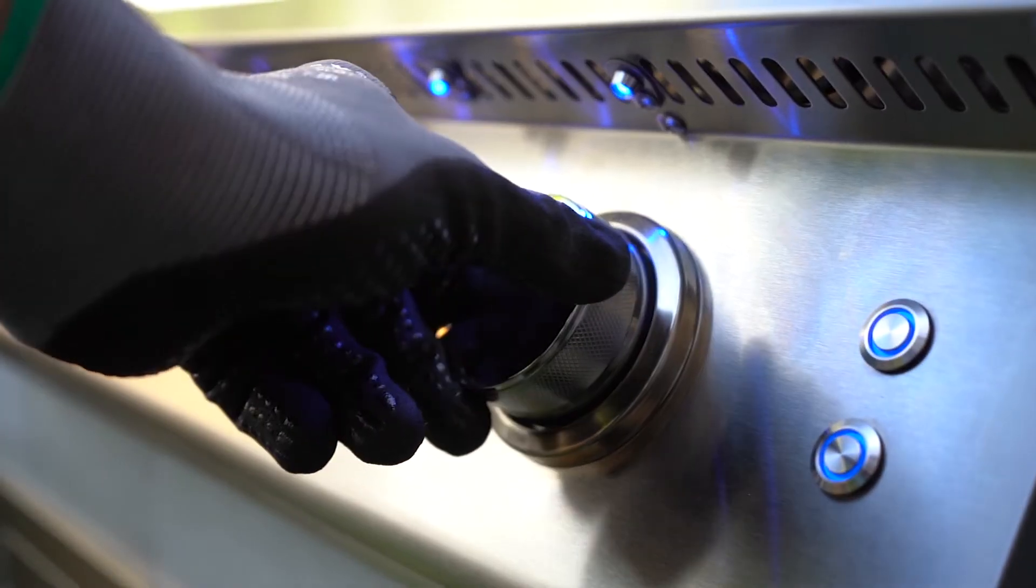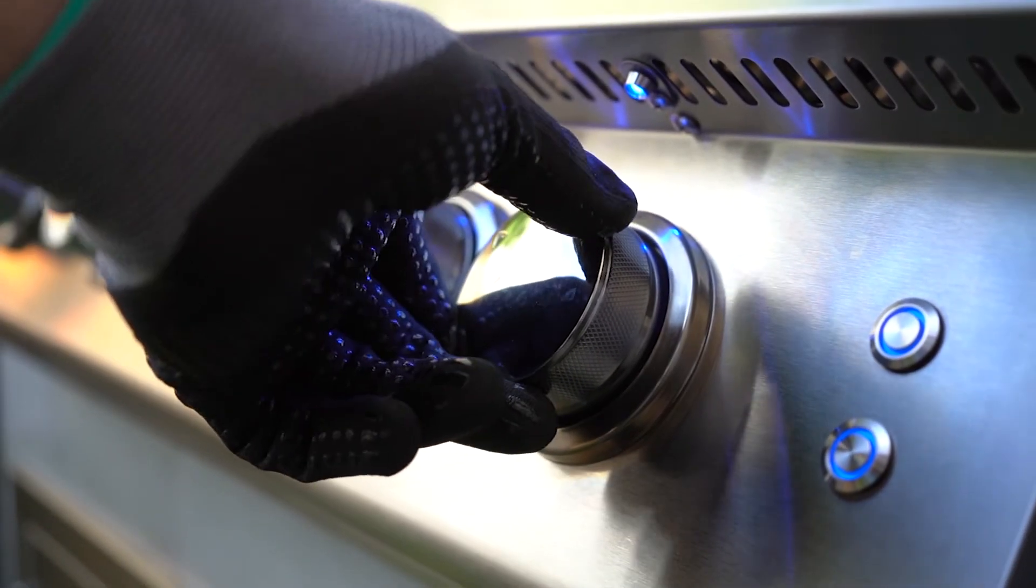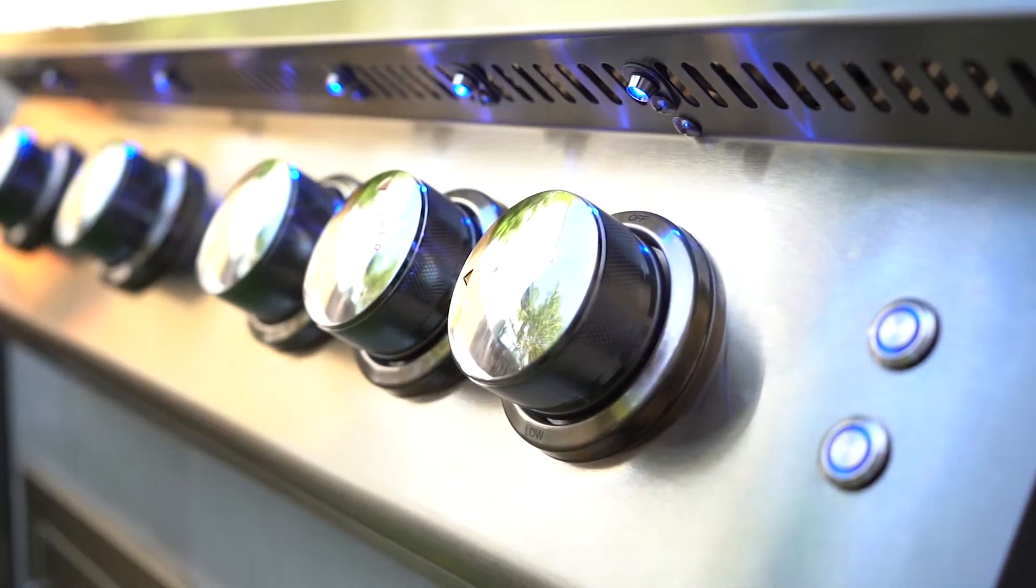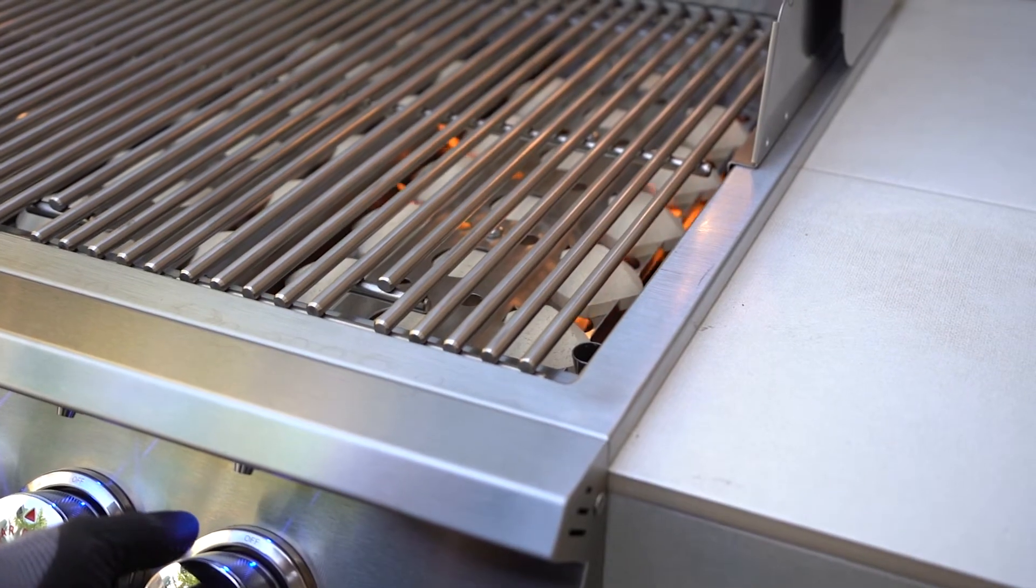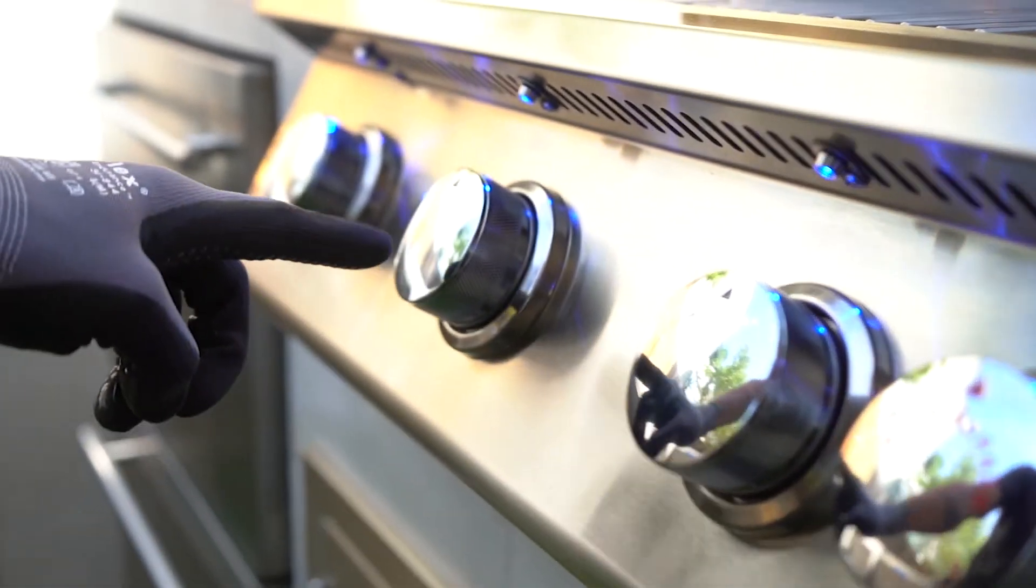To ignite the main burners, press in on the knob and slightly turn it to the left. Wait three seconds and continue turning until you hear a click. Make sure the burner is lit. Follow the same step for any other main burners you would like to ignite.